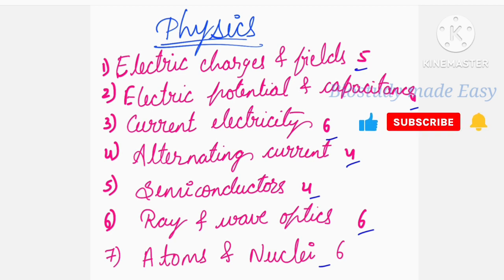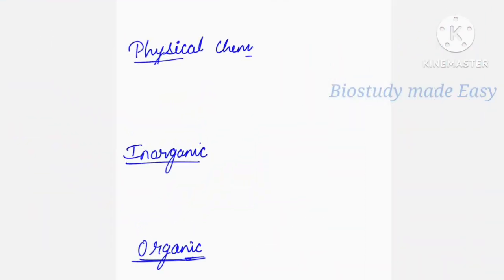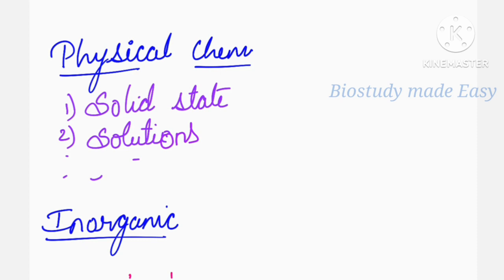Next, for Chemistry, I'll cover the important chapters divided into three parts: Physical, Inorganic, and Organic. For Physical Chemistry, the important chapters are Solid State and Solutions, Electrochemistry, and Chemical Kinetics.